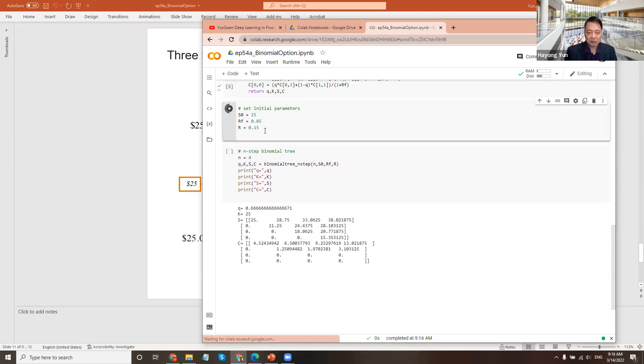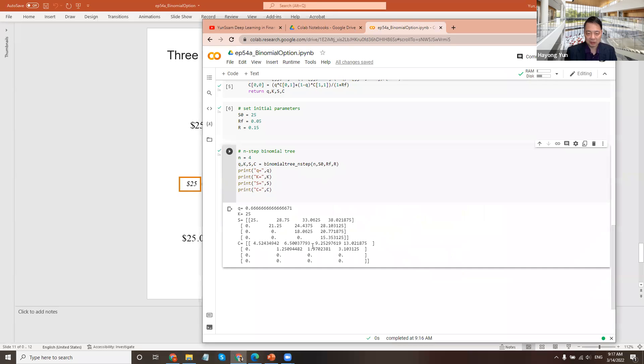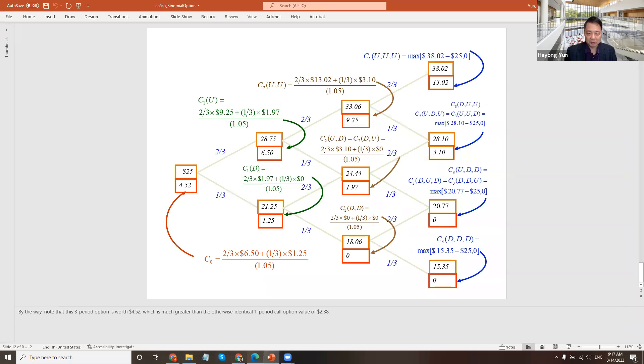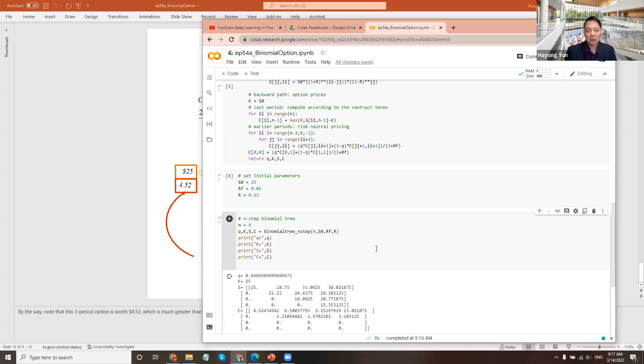Would this work? You can try: $25, 5%, 15% up or down. I run it. Q is the same, two-thirds. Strike price is $25. The stock prices computed: $25, $28.75, $21.25, and $38.02, $28.10, $20.77, $15.35—what we calculated. It's all matching up. It does correctly compute it. The option values are 13, 3, 0, 0, 9, 1.97, 0, 6.5, 1.25, and eventually $4.52 for the initial date. The program implements what it is. This is a simple demonstration of how to implement binomial option pricing in Python.